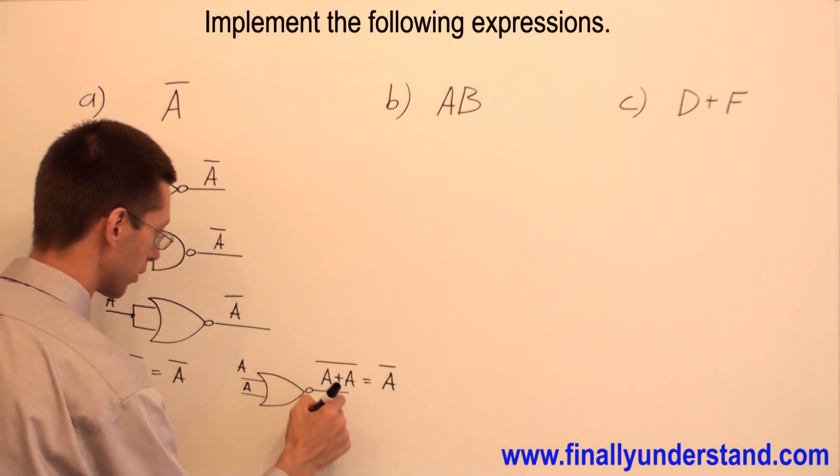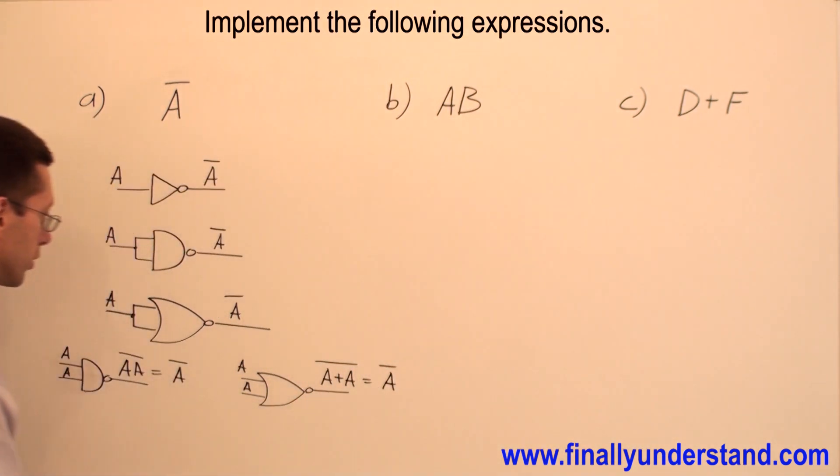And I have to keep the bar over it. That's why this is equal to A̅. That's why I have three examples of inverters.